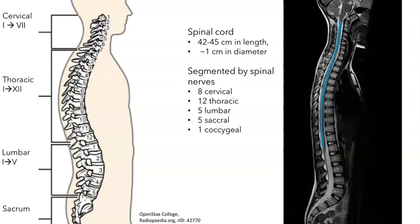One difference is that there are only 7 cervical vertebrae while there are 8 segments in the cervical part of the spinal cord. Another difference is that while the vertebral column runs all the way down to the tailbone, the spinal cord itself is not quite this long — it terminates earlier, although the spinal nerves may still exit between the vertebrae further down.